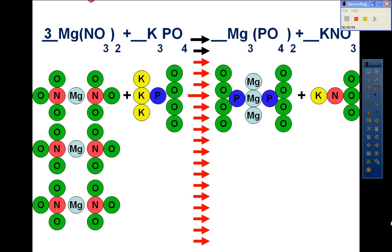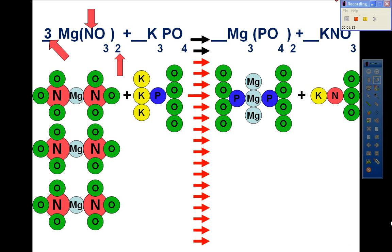Now we have to compare the nitrogen. We have six on this side due to the coefficient of three and subscript of two. We count them up and can see that we have six on the left. On the right side, we have one.